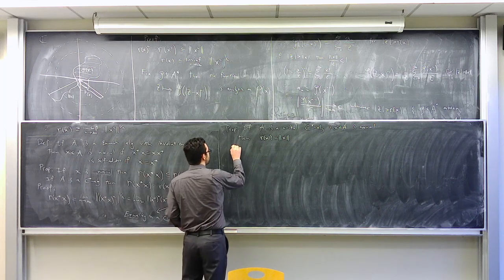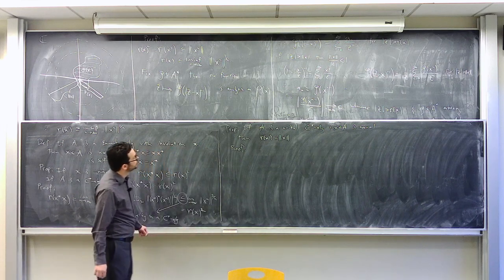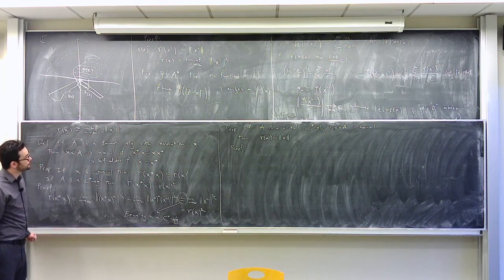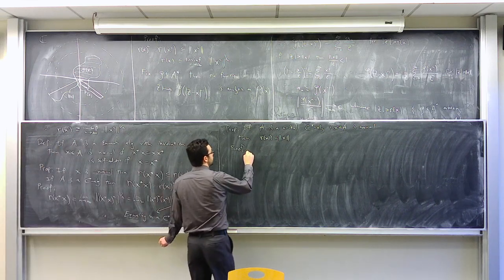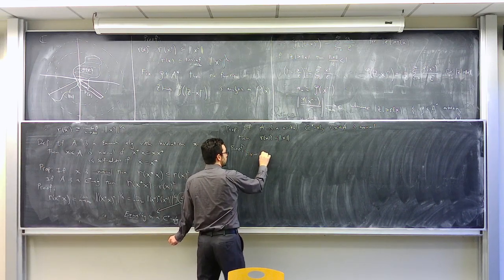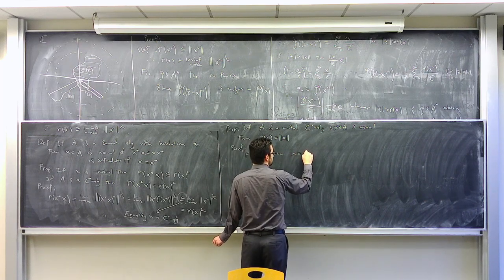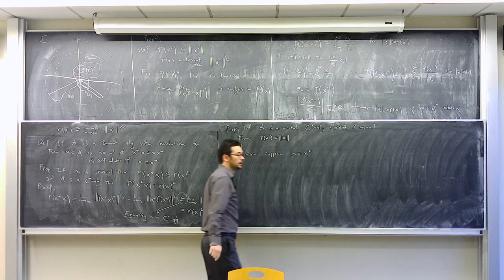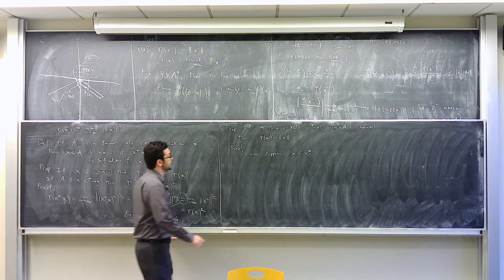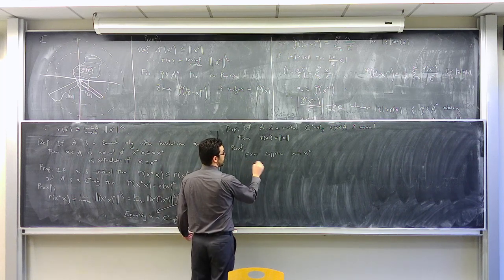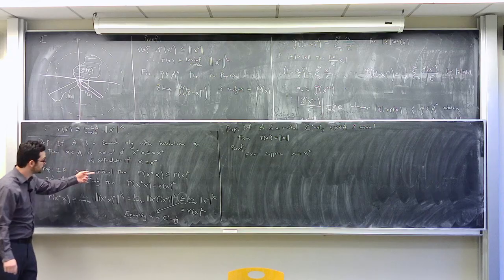To prove this proposition, we first handle the case when x is self-adjoint. Self-adjointness implies normality, so we can proceed using the tools we've developed.